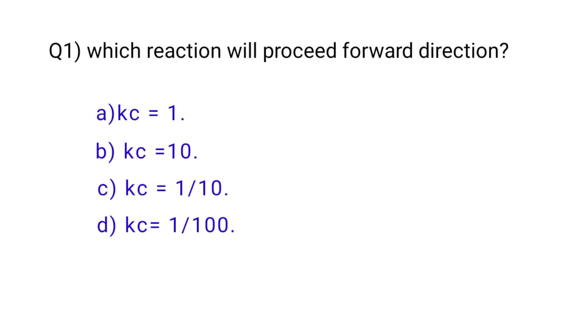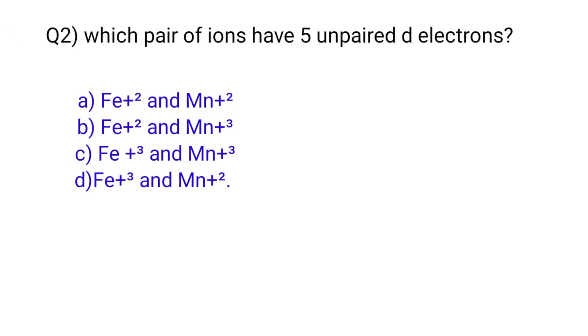Question number one: which reaction will proceed in the forward direction? The correct option is A, when K is equal to one. Question number two: which pair of ions have five unpaired d electrons? The correct option is C, Fe³⁺ and Mn³⁺.